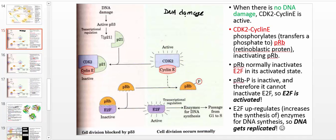There are sort of two classes of DNA damage that are not too well defined. In general, you can have high DNA damage and you can have low amounts of DNA damage. When you have a low amount of DNA damage — low enough and insignificant enough that the cell can repair it — the cell activates the mechanisms for DNA repair.